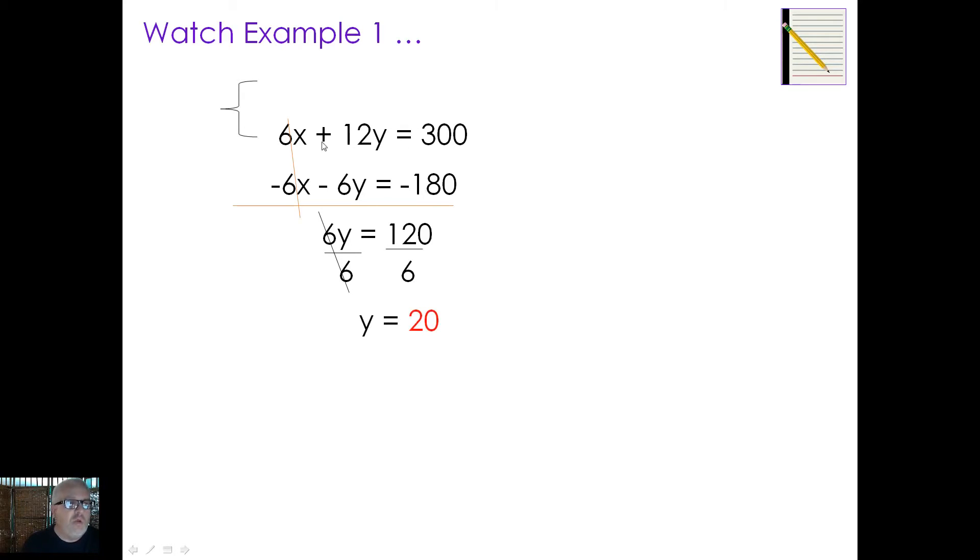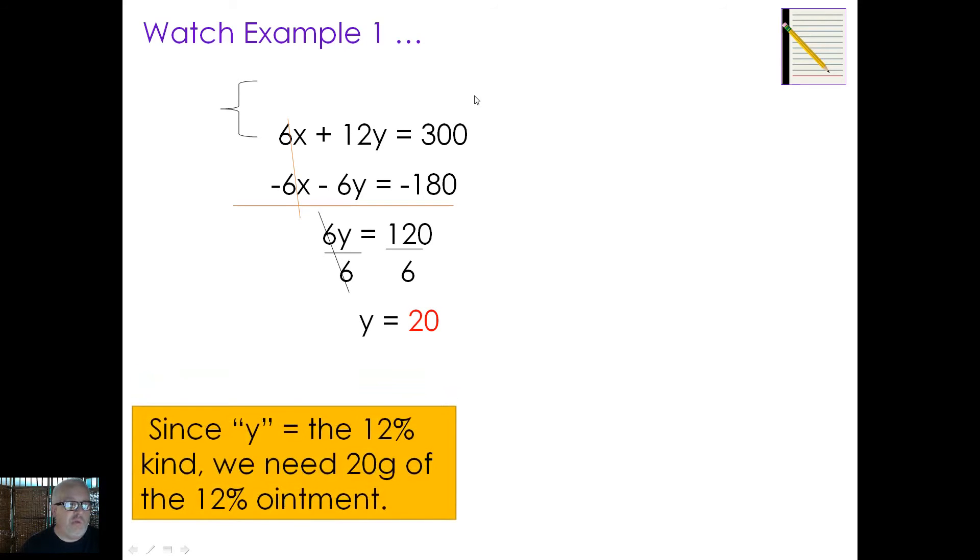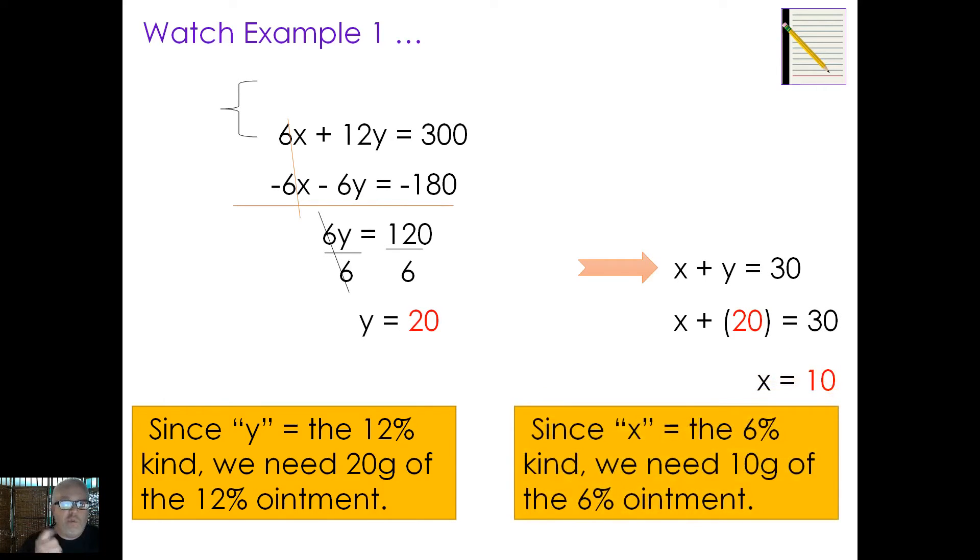Now let's do a little quick math here. We end up with dividing both sides by 6, and we know that Y is 20. What was Y associated with? Well, if we go back and look, Y was associated with the 12%, the 12% ointment. So how many grams do we need? We need 20 grams of the 12% ointment. So that's half of your answer. Well, how do we find the other half? Plug that 20 in to one of the original equations. I always go for the easiest one. So the original equation was X plus Y equals 30. Throw a 20 down, and we know X equals 10. So now we have 10 grams of the 6% ointment and 20 grams of the 12% ointment. That is your very first mixture problem.